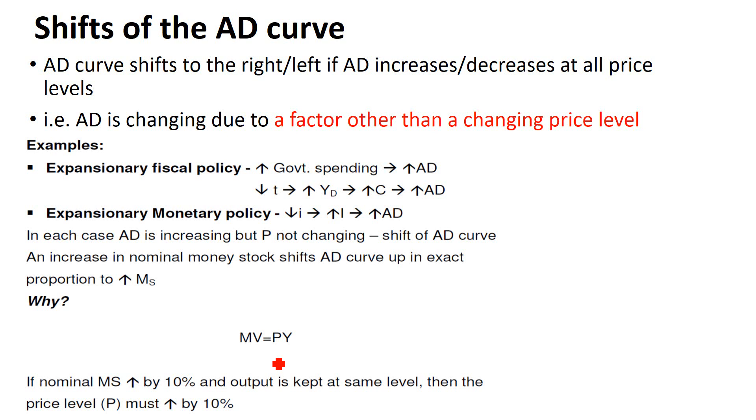Shifts of the aggregate demand curve are caused when something changes other than prices. When aggregate demand changes due to a factor other than a changing price level, this will cause a shift of the aggregate demand curve either to the right or to the left.